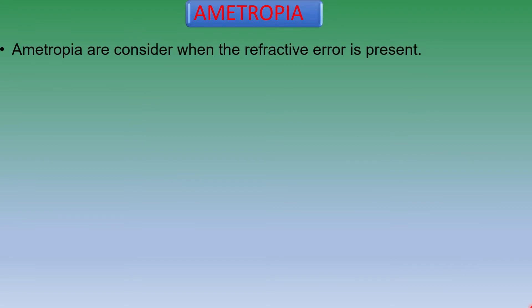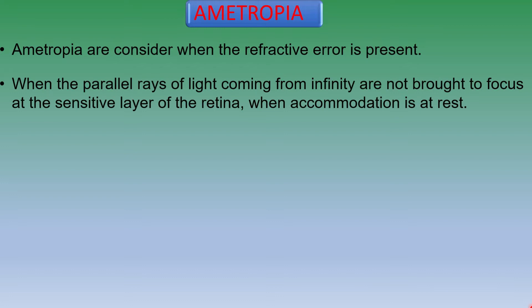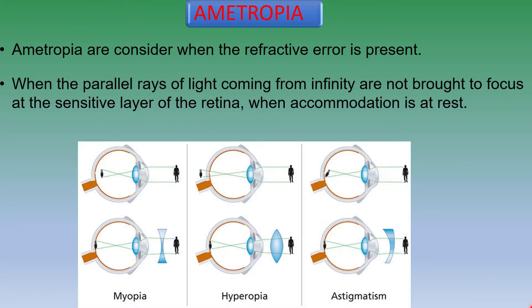Firstly, let's talk about Ametropia. Ametropia is considered when the refractive error is present. When the parallel rays of light coming from infinity are not brought to focus at the sensitive layer of the retina when accommodation is at rest. It means the rays of light coming from infinity are focused either in front or behind the retina, in one meridian or both the meridians. For example, myopia, hypermetropia, and astigmatism.